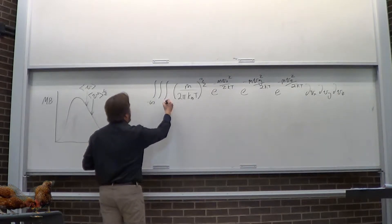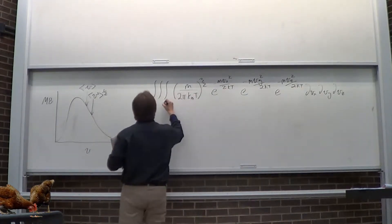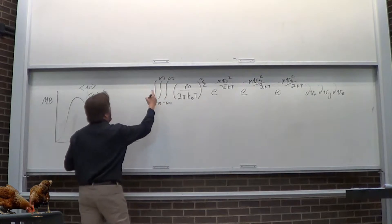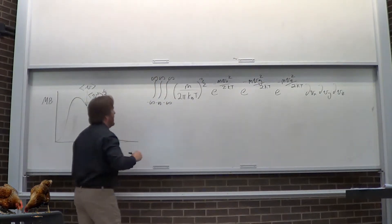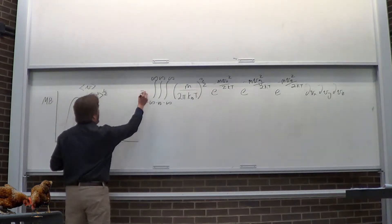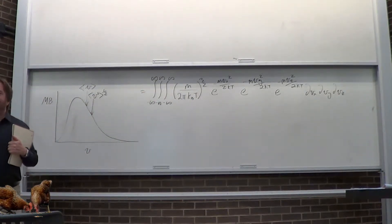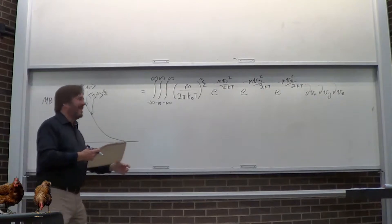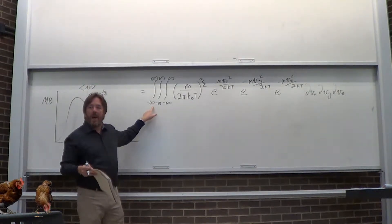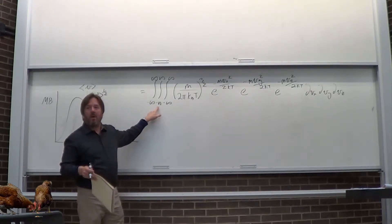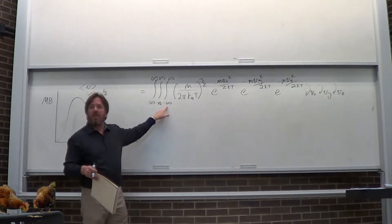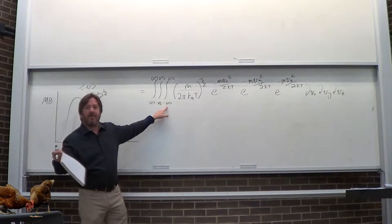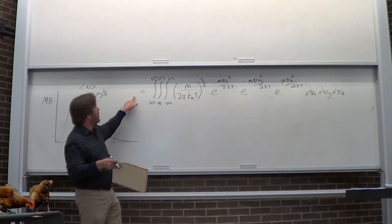Triple integral: the inner one is for z, going from minus infinity to infinity. Let y go from minus infinity to infinity, and x from minus infinity to infinity. What's the answer? You should be able to integrate this in your head. It's 1. This is the probability that you're either moving forward or backward or not at all, left or right or not at all, or up and down or not at all. The probability is 1.